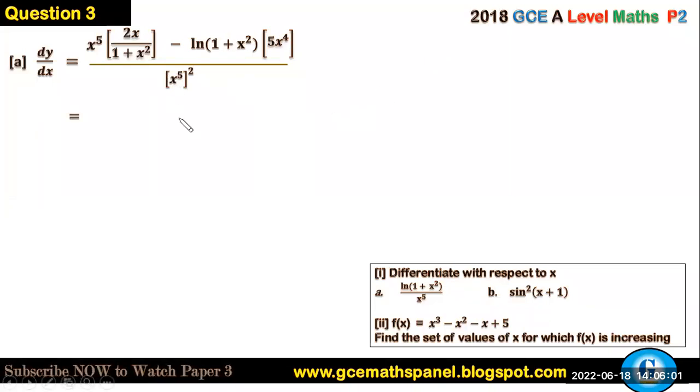So we continue to simplify this. We can factor out x⁴ from numerator and denominator. And we multiply all through, that's numerator and denominator by 1 + x². We are going to have 2x. So here I factor out x⁴, so one of the x comes inside, so that will give us 2x times x to 2x².